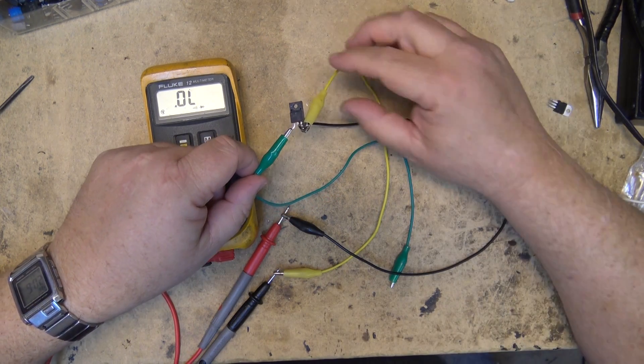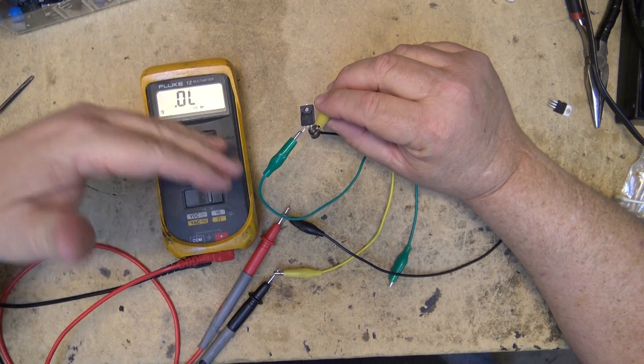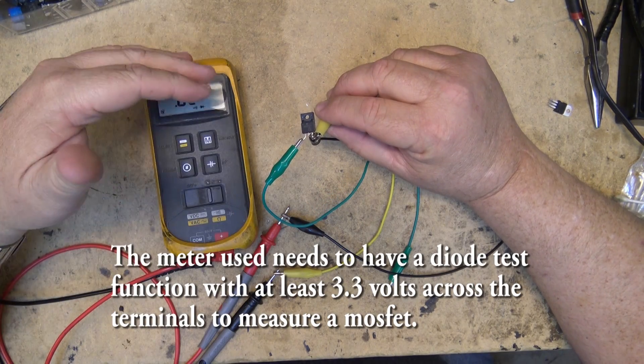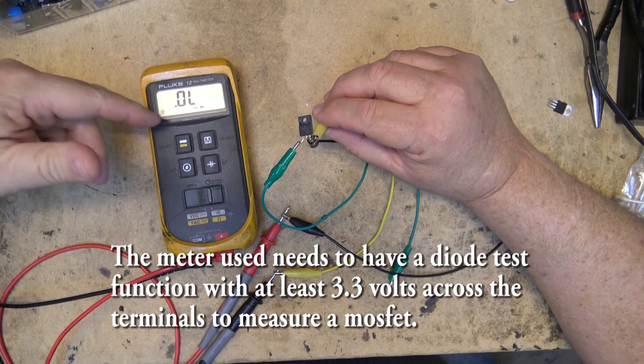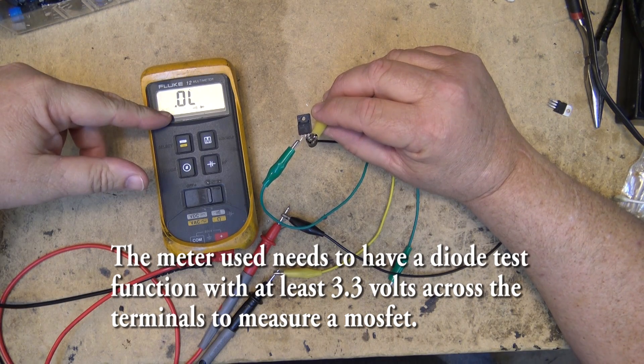A MOSFET is a high impedance device, so you can't just measure it with your meter like you would a conventional transistor, because your readings are going to be showing as open.